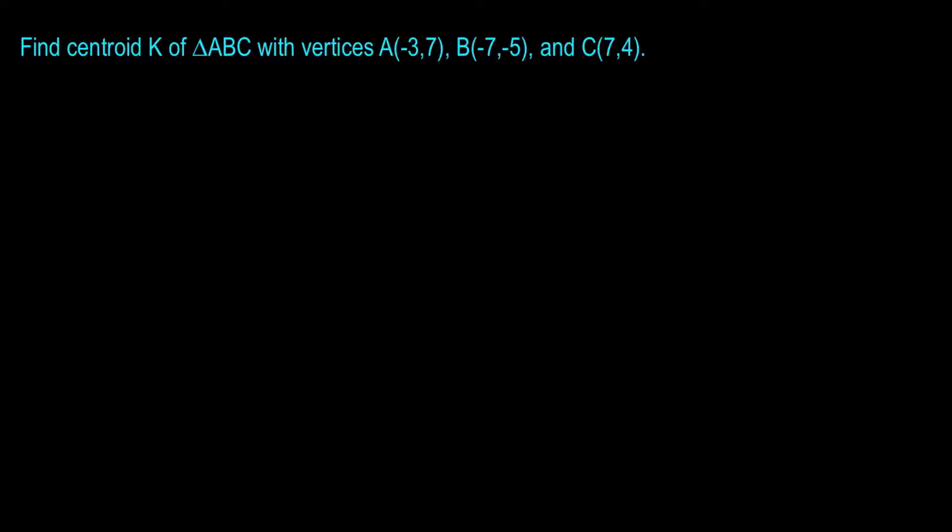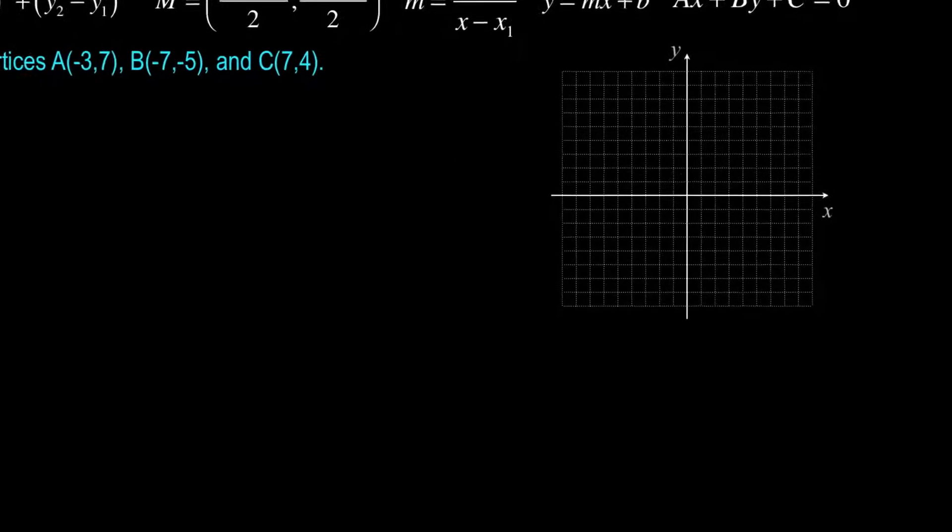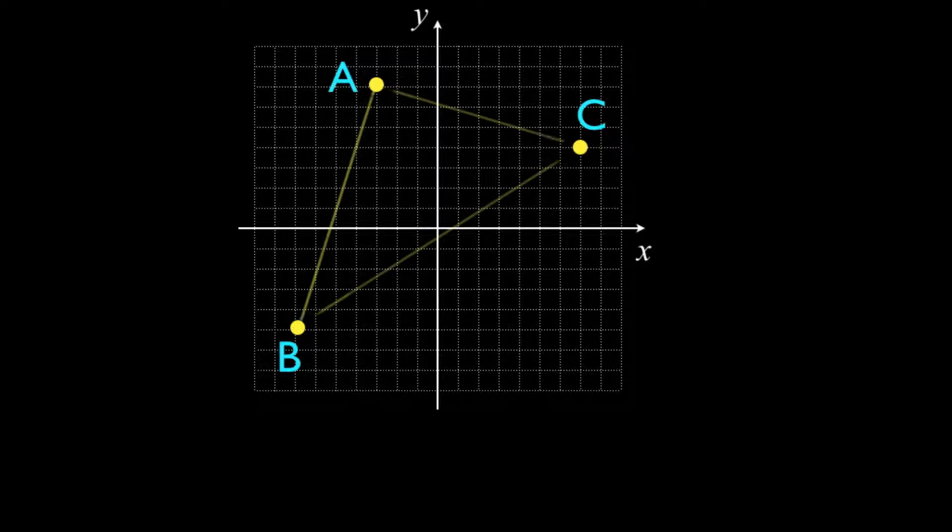So the first thing that I'm going to do is construct a diagram, and I think that makes sense in all of our problems. So I'm going to plot the points A, B, and C on my grid, and I'm going to construct the triangle. Now, I have to ask myself, what exactly is a centroid? Well, a centroid is the intersection point of the three medians of a triangle. Now, we have to remind ourselves what a median is.